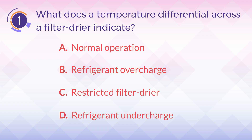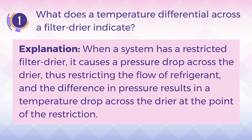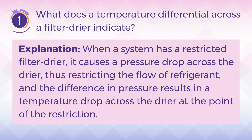The answer is C. Restricted filter dryer. Explanation: When a system has a restricted filter dryer, it causes a pressure drop across the dryer, thus restricting the flow of refrigerant, and the difference in pressure results in a temperature drop across the dryer at the point of the restriction.